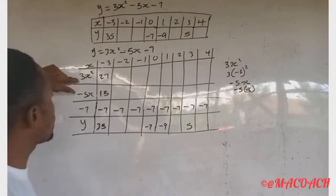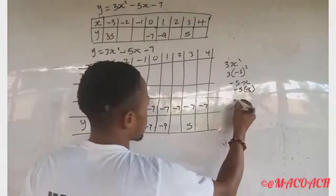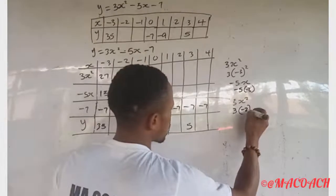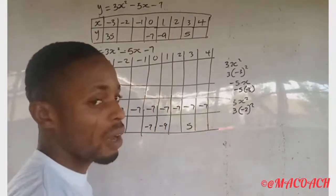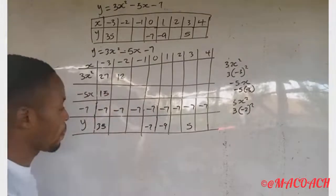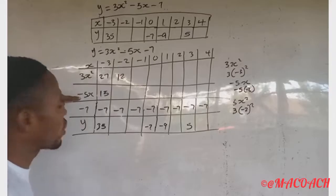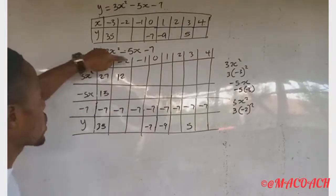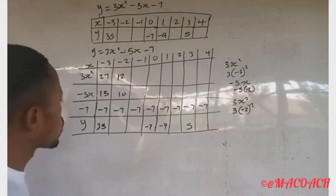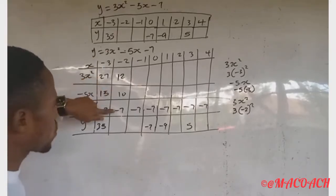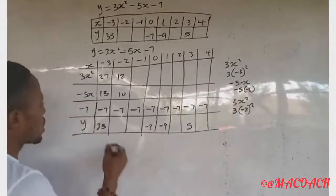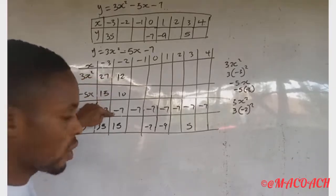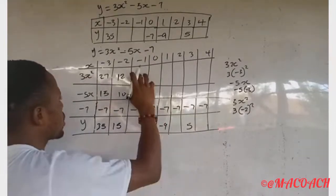When s equals minus two: for three s squared, three times (minus two) squared equals three times four, which is 12. For minus five s: minus five times (minus two) gives plus ten. So 12 plus 10 plus minus seven equals 22 minus 7, which gives us 15. So y equals 15 when s equals minus two.